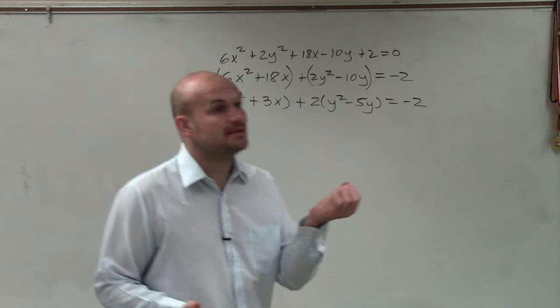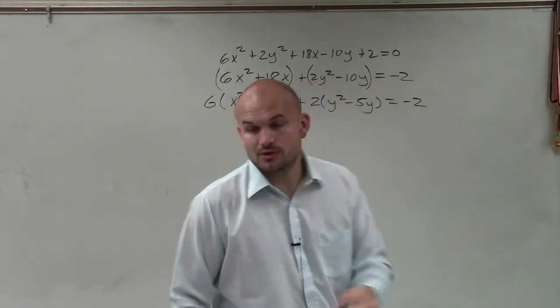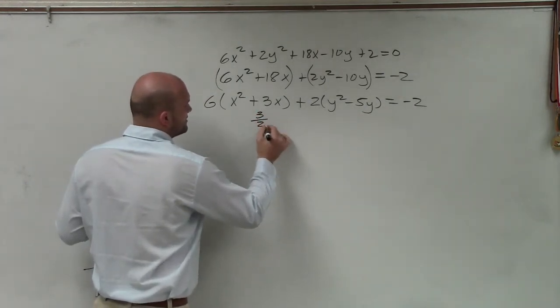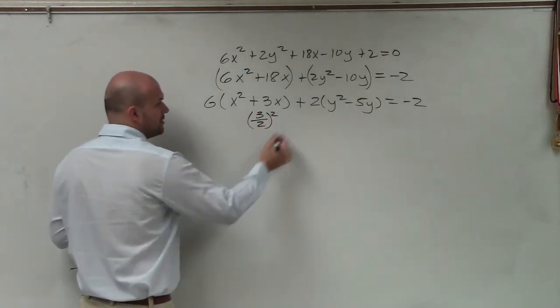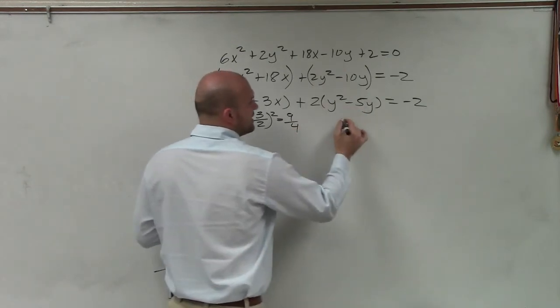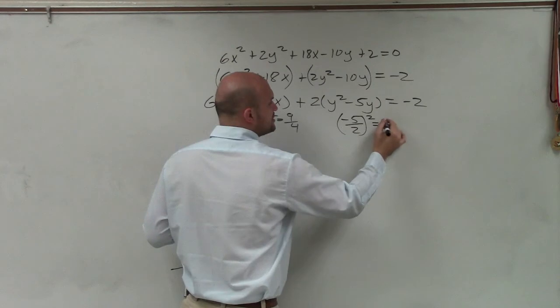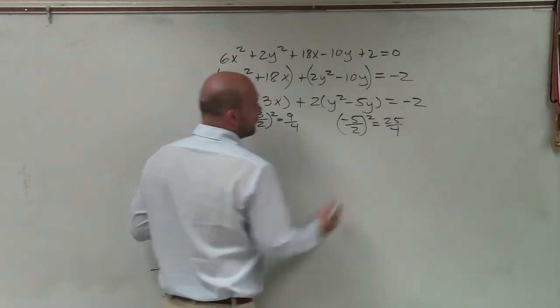Now, the next thing I need to do is take the middle term, which is my b, and divide it by 2, and then square it. So in this case, I'll take 3, divide it by 2, and square it, which equals 9 fourths. In this case, I'll take negative 5, divide it by 2, and square it, which equals 25 over 4.